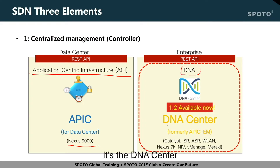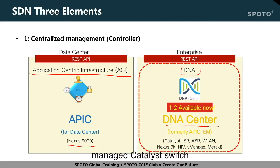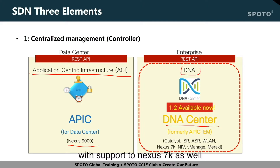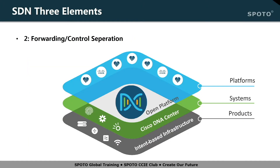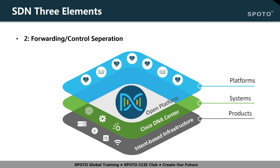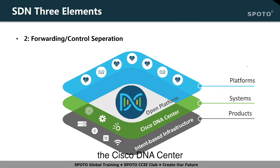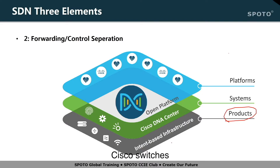The new direction is version 1.3 — the DNA Center, the centralized management, formerly called APIC-EM. This product is primarily designed for managed Catalyst switches, ISR-ASR routers, and wireless LAN, with support for Nexus 7K as well. The second criterion is it needs to separate the forwarding and control plane — forwarding control separation. In Cisco's case, there are three layers: at the bottom are the products, in the middle is the system — the Cisco DNA Center — and at the top is the platforms.